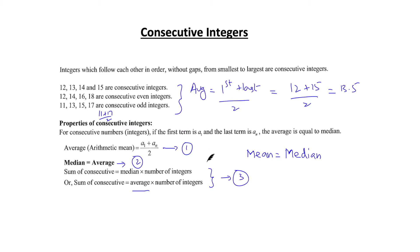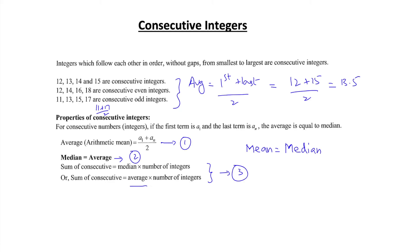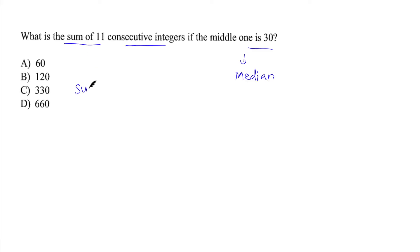Let's now have a look at a couple of questions. What is the sum of 11 consecutive integers if the middle one is 30? This is basically median and we also have the number of integers. So you simply apply the formula: median into number of integers will give us the sum. The sum should be 30 into 11. The answer should be 330 which is option choice C.